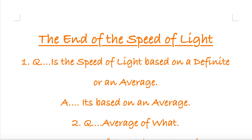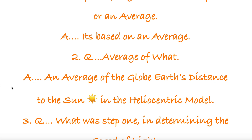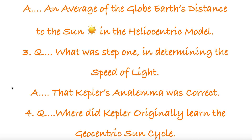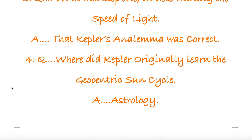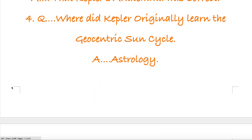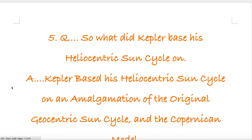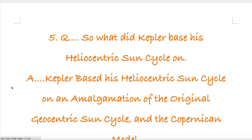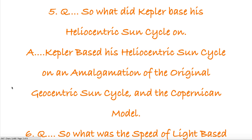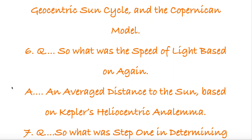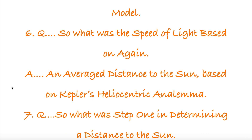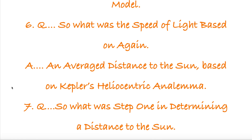Is the speed of light based on a definite or an average? It's based on an average — an average of the globe Earth's distance to the Sun in the heliocentric model. What was step 1 in determining the speed of light? Kepler's analima was correct. Where did Kepler originally learn the geocentric Sun cycle? Astrology. So what did Kepler base his heliocentric Sun cycle on? An amalgamation of the original geocentric Sun cycle and the Copernican model. So the speed of light was based on an average distance to the Sun based on Kepler's heliocentric analima.